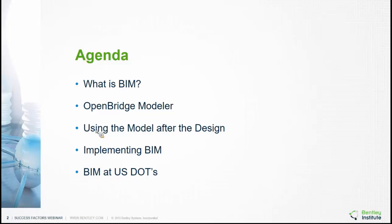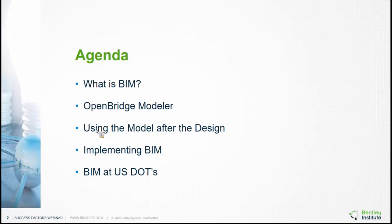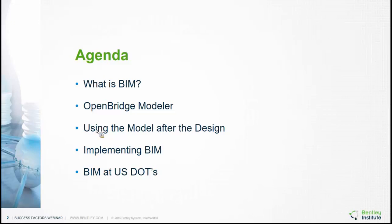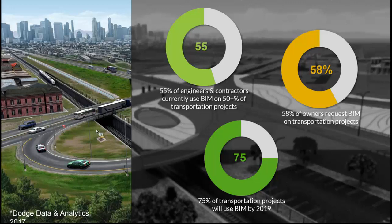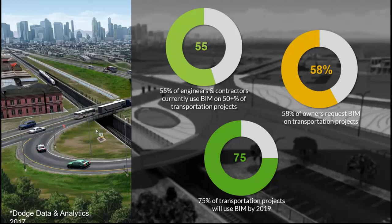We're going to review how this BIM concept or approach is being tackled by different DOTs. BIM is here to stay — we cannot avoid it. We have to do 3D modeling because the industry requires that. The old times of plan, profile, and cross-section sheets are basically going away. We're pushing for 3D models in which efficiency and the cost of the project will get reduced. According to Dodge Data Analytics, 70% of transportation projects will use BIM by 2019.